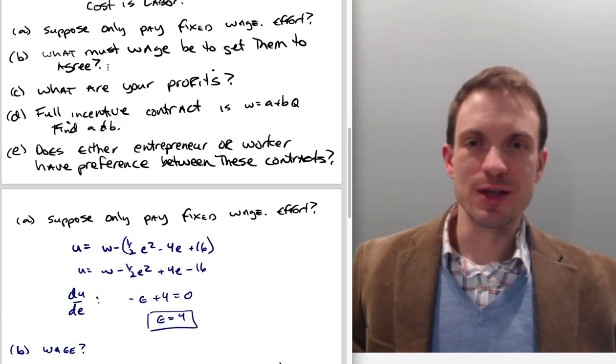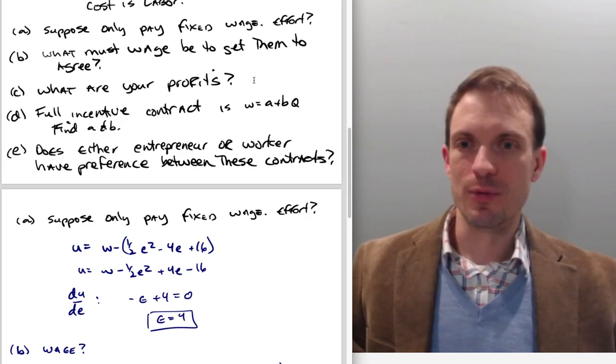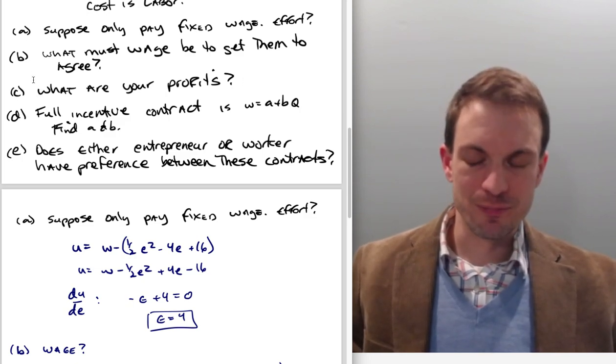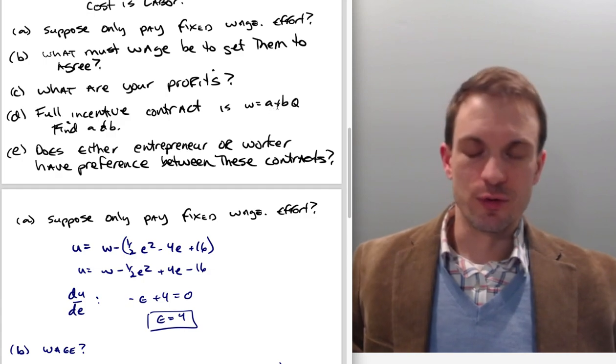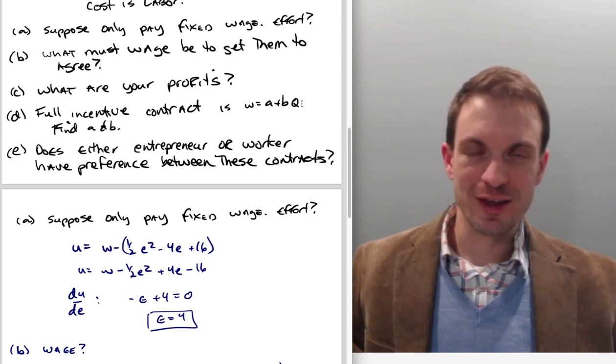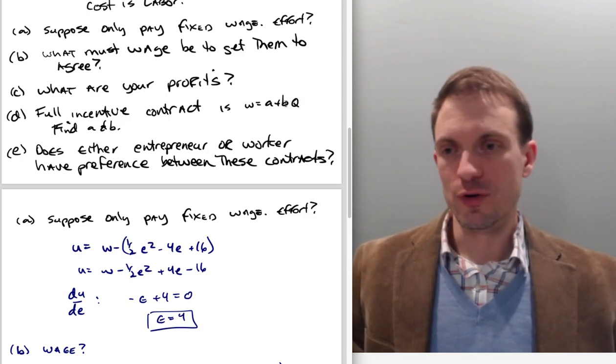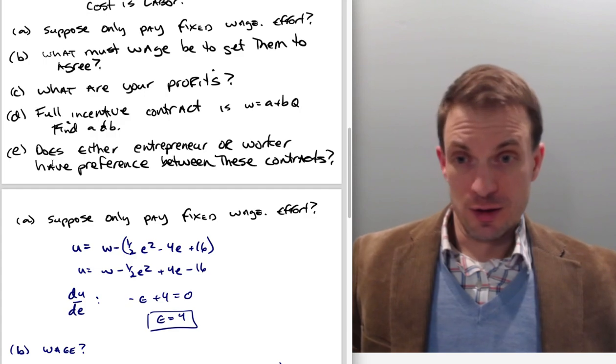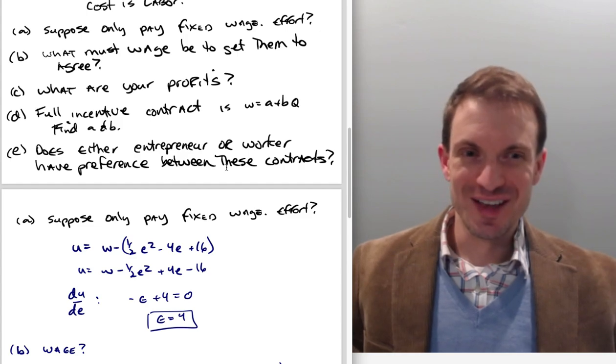In this example, we're just thinking about some fixed wage. And then what's going to be the effort that results? And then we can think about what the wage would have to be to get the worker to agree to that contract. Then in C, we'll think about what are our profits. Basically, A, B, and C are all figuring out what's going to happen if we pay a fixed wage. D is going to be investigating what happens if we have a full incentive contract.